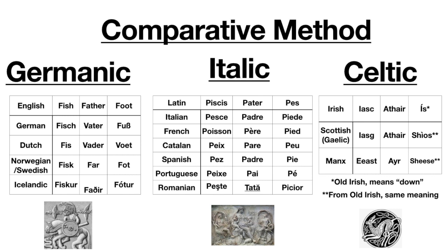We can also see that the word for father in Romanian is 'tată'. Presumably this word does not come from the same root as pater, padre, and father. There is a word in Latin — tata — which means father, more like 'daddy' or 'dad', based on child speech like 'tata'. So the Romanian word tată does not come from the same place as pater, even though it does mean father and has a Latin corresponding word.